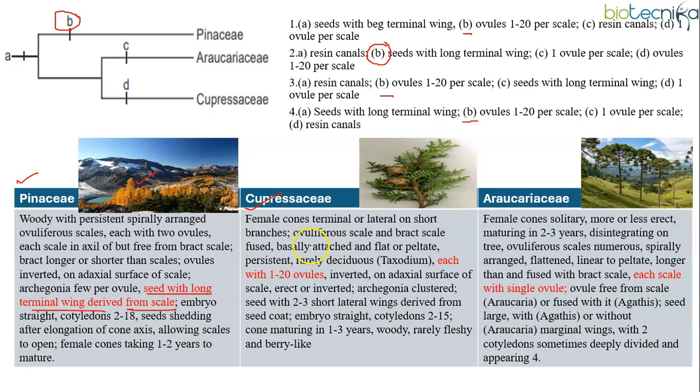Cupressaceae family, it's also called as cypress family. And the salient feature of this family is that it has trees or shrubs, leaves scale-like or needle-like and they are persistent on the branches after dying. And this family has 1 to 20 ovules. That means D should be ovules 1 to 20 per scale which is again given in option 2.